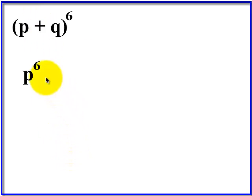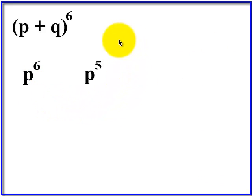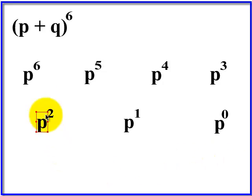The first term is always just the first term raised to whatever the exponent is. The second term is the same term, but the exponent is one minus the first one. We're going to put them in ascending order. So we've got p to the sixth, p to the fifth, all the way down to p to the zero.